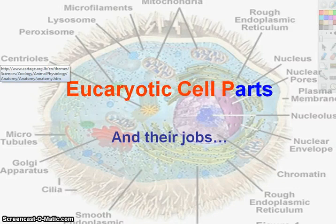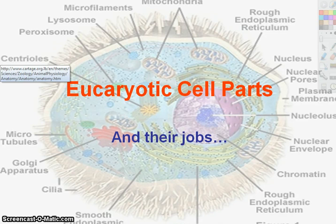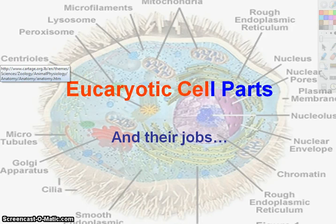We've talked about the difference between prokaryotic and eukaryotic cells — that's what we did yesterday. Today we're going to start talking about the different parts of eukaryotic cells. We're only going to do a couple of them.